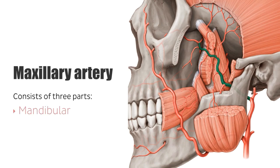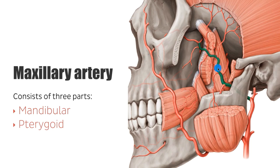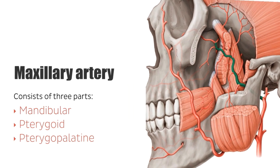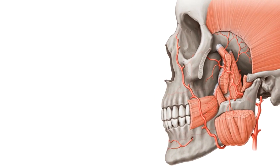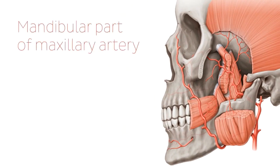The very first part is going to be the mandibular part, which is also known as the first part coming out of the external carotid artery, located around here. Then in the middle we're going to find the pterygoid part, and finally we're going to be looking at the pterygopalatine part, which is around the terminal end of the maxillary artery. We're going to start off with the mandibular part of the maxillary artery.